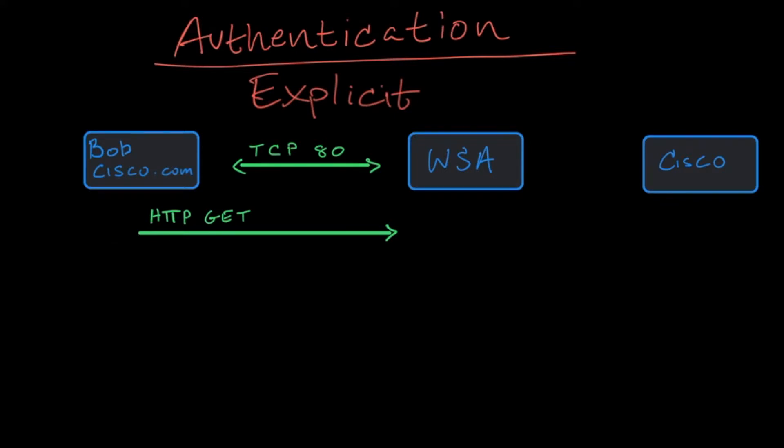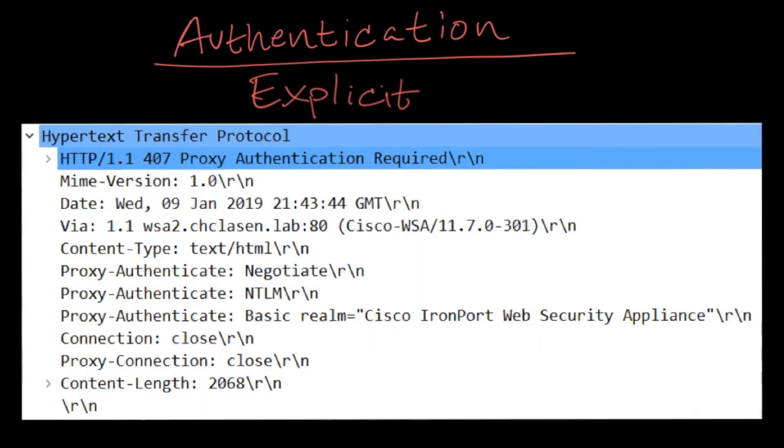The WSA is happy to forward this request upstream to Cisco, but first it wants to know that Bob's computer is actually allowed to go there. So it responds with a 407 proxy authentication request. This lets Bob's browser know that it needs to authenticate before it can get to the internet. It also includes a number of headers called proxy authenticate headers. They will indicate to Bob's computer which authentication methods it supports. These correspond directly to what is configured in the matched identification profile in the WSA.